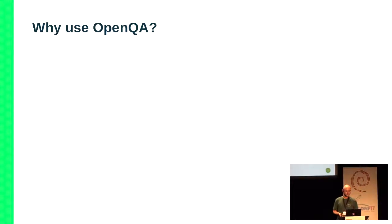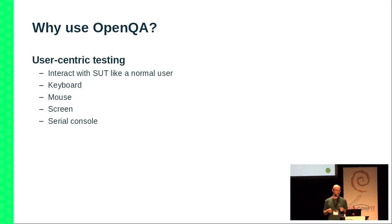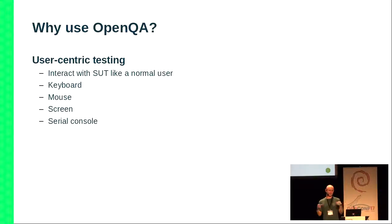Why would you want to use OpenQA? It's because OpenQA has a very user-centric testing model. It doesn't hook into any special hooks anywhere — it literally interacts with the system under test just like a normal user would. It looks at the screen, tries to find things that would be interesting in the test scenario — either the entire screen or just a portion of it. It can type on the keyboard, move the mouse, and click. It also interacts with the system via a serial console.